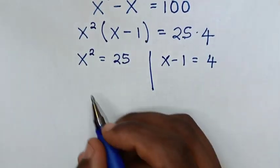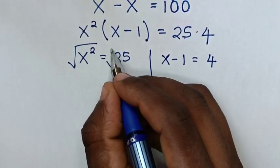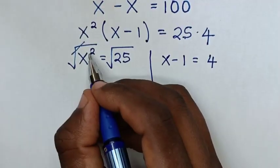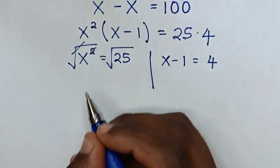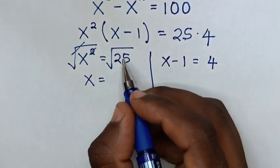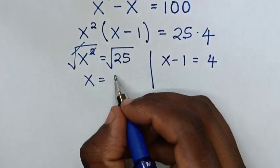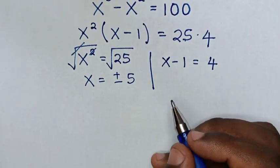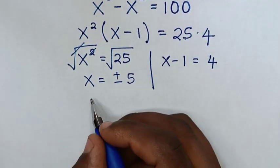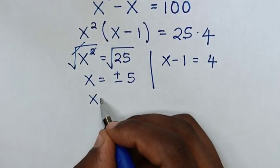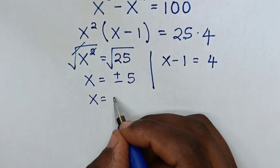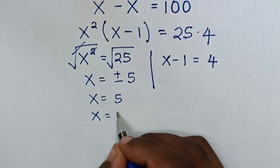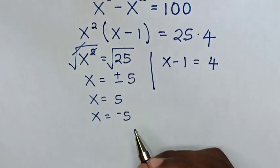In the next step we apply square root on both sides, so the square root cancels with the square, giving x is equal to plus or minus the square root of 25, which is plus or minus 5. So we have two solutions: x is equal to 5 and x is equal to negative 5.